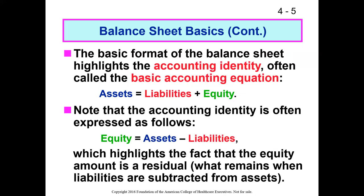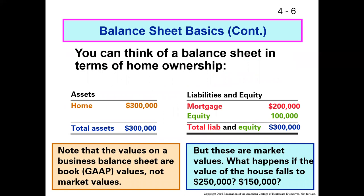Assets always have to equal liabilities plus owner's equity. Here's a demonstration: a home worth $300,000 represents our assets. On the liabilities and owner's equity side, we have a $200,000 mortgage and $100,000 in equity. Those two things add up to the value of the total assets — $300,000 equals $300,000. Now we're in balance — think of the scales being level.